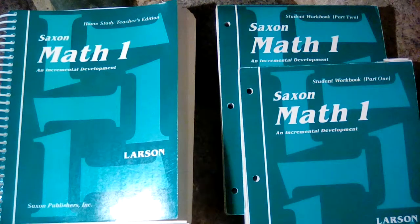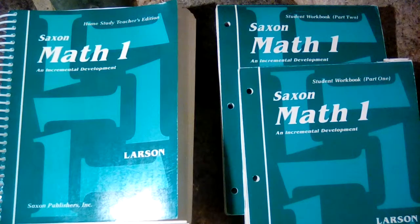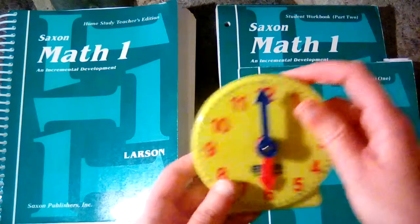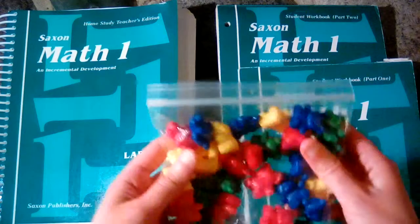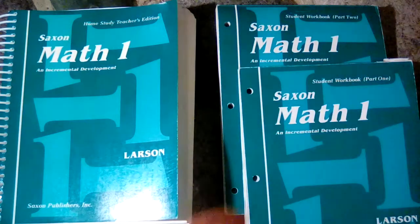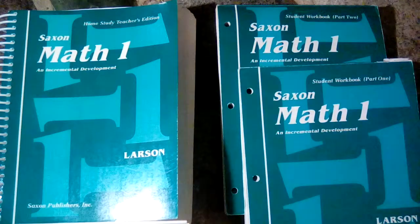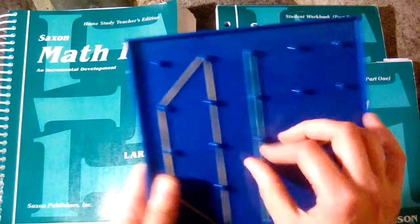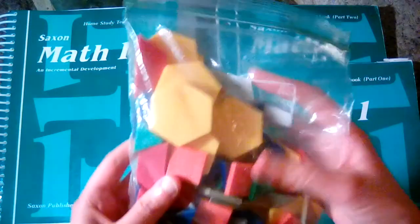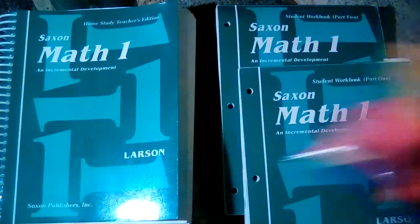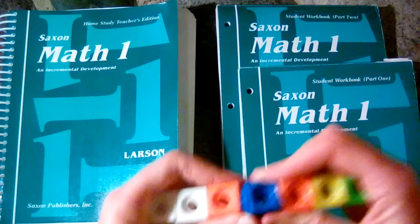And you will need the manipulative kit. The manipulative kit is used for Saxon Math K, 1, 2, and 3, so I'll show you some of the things in the kit. So we have a clock, teddy bears, colored tiles, geoboards, we have pattern blocks, and linking cubes, and a bunch of other things as well.